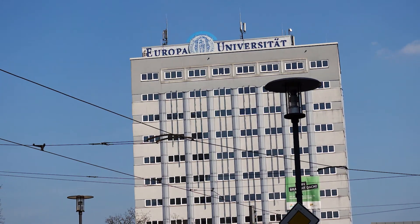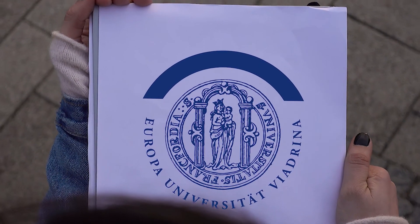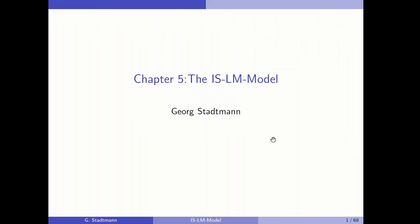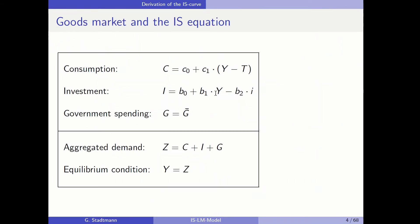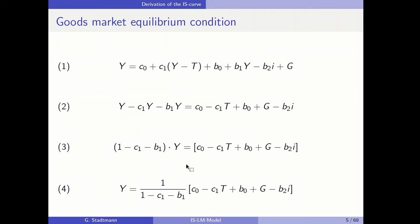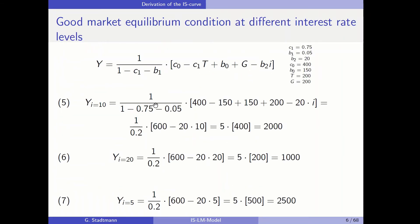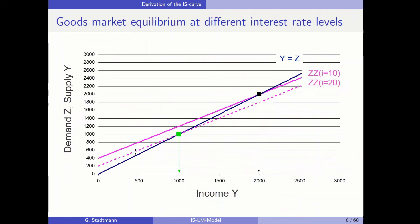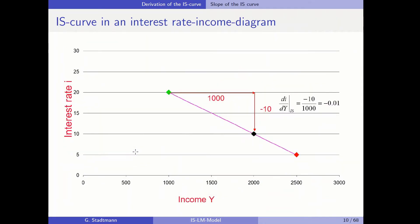Welcome back to class. I would like to talk about the IS-LM model. In the first part we talked about the IS relationship. We started by looking at the equilibrium conditions, then examined the goods market equilibrium condition, changing the interest rate several times in order to derive the IS relationship.